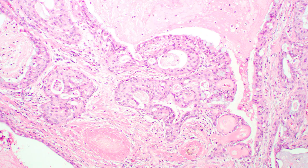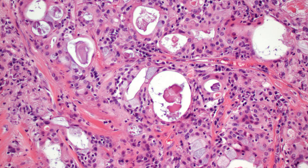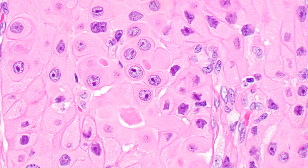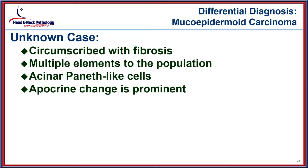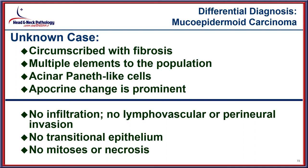Extravasation of mucinous material and mucocytes are easily identified at higher power. Oncocytic tumors can create quite a diagnostic differential problem when seen. In our case, there was no infiltration, no lymphovascular or perineural invasion, no transitional epithelium, and no necrosis — so mucoepidermoid carcinoma can be eliminated from further consideration.